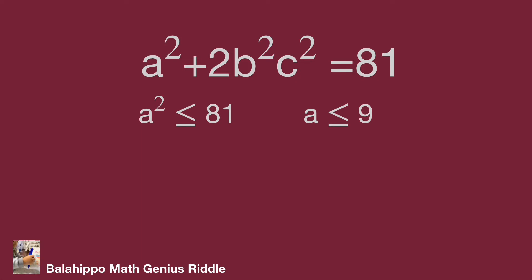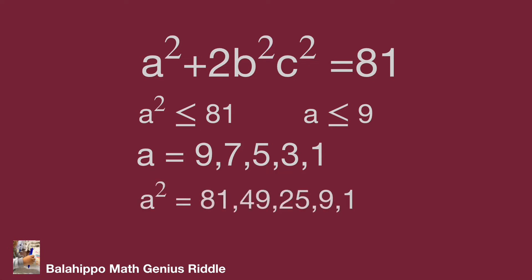We know a squared is an odd number, so a is also an odd number. Therefore, a can equal 9, 7, 5, 3, or 1. And correspondingly, a squared equals 81, 49, 25, 9, or 1.